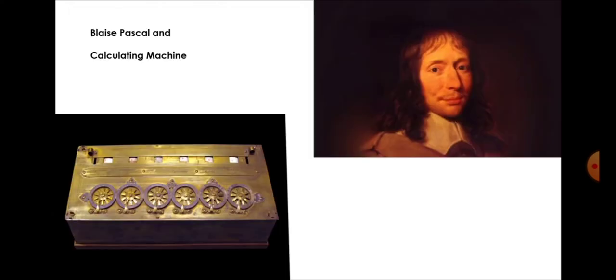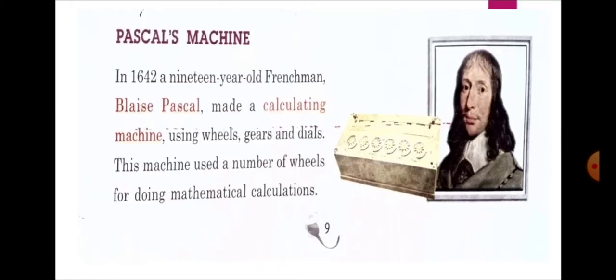Our next device is Pascal's machine. This is Blaise Pascal and his calculating device. In 1642, a 19-year-old Frenchman, Blaise Pascal, made a calculating machine using wheels, gears, and dials. This machine used a number of wheels for doing mathematical calculations.